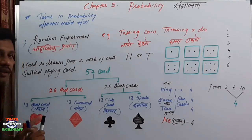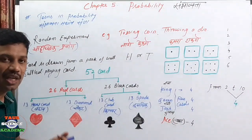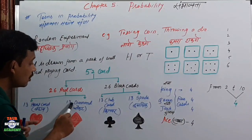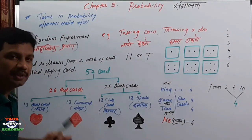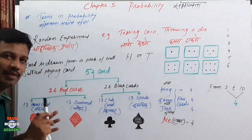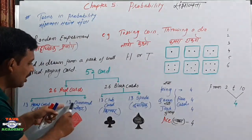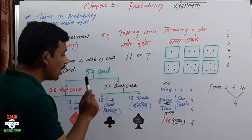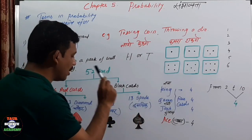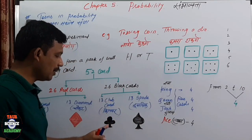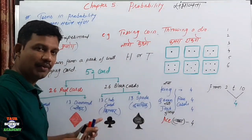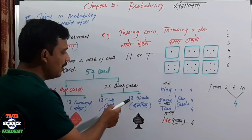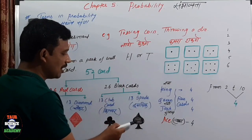So 13 cards are heart cards (badam), and we have 13 diamond cards. That makes 26 red cards. For the black cards, there are 13 club cards (killwar/clubs) and 13 spade cards. So 13 clubs and 13 spades make 26 black cards.